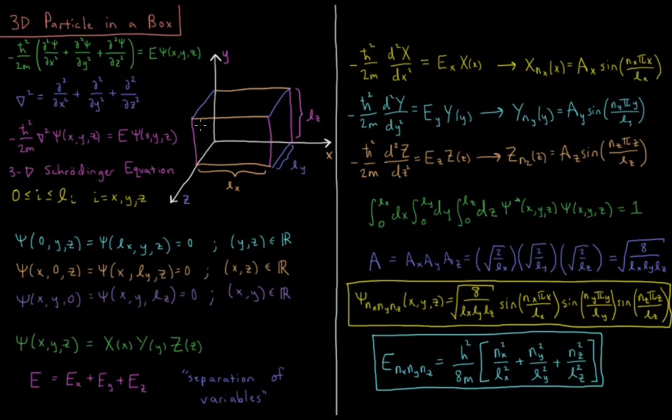So we're going to have a particle in a box model system, so we'll still have a box. It has dimensions lx in the x direction, ly in the y direction, lz in the z direction for each of its lengths.